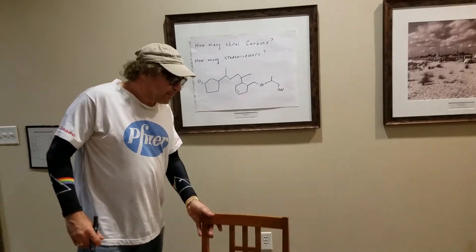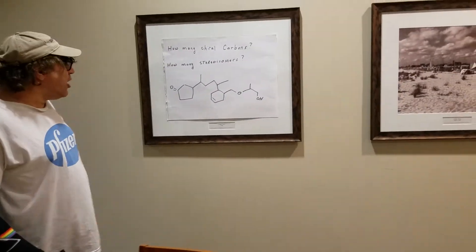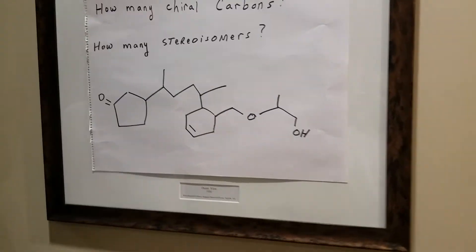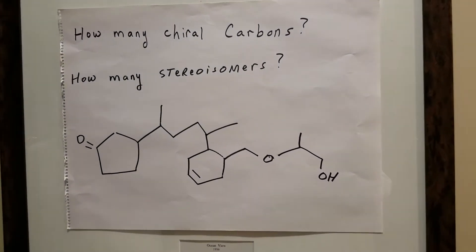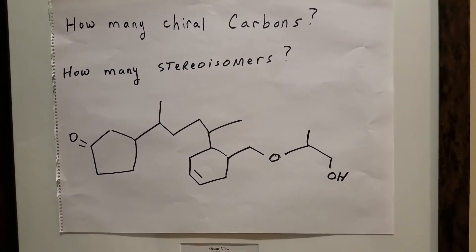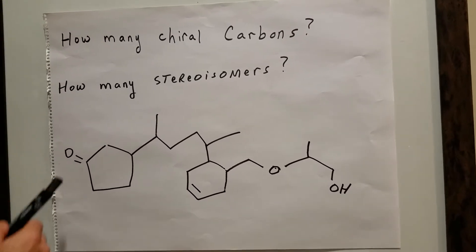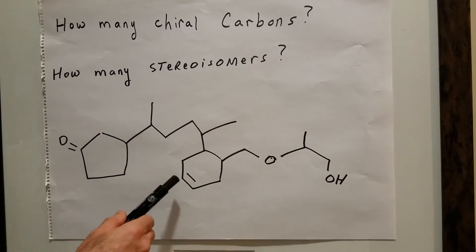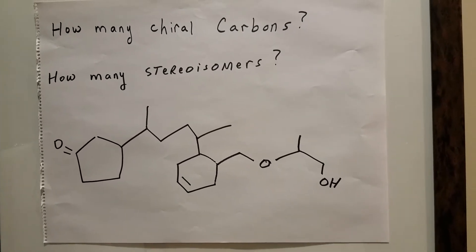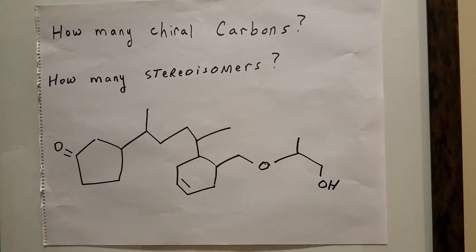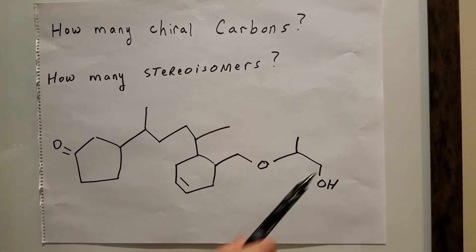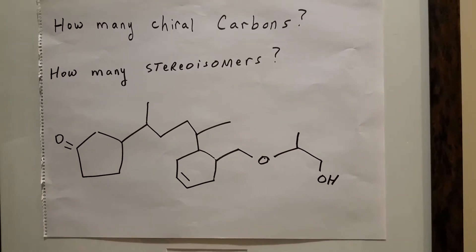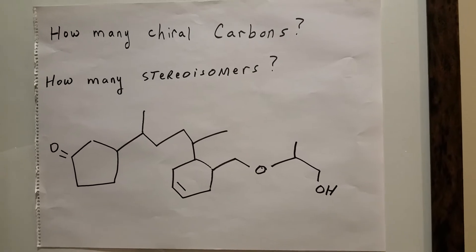Dr. Romano, I was taking a break from studying. Let's have a look at what we have here. We have a very large molecule, but before we even answer a question, why don't we just identify the functional groups? To the left I have a ketone, then I have a cycloalkene, I have an ether, and I have a primary alcohol.